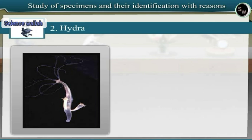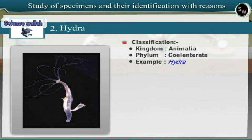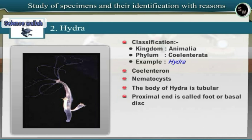Specimen 2: Hydra. Observe a permanent slide of Hydra under the low power of a compound microscope. Hydra belongs to Phylum Coelenterata of Kingdom Animalia. Hydra has a large coelenteron cavity inside the body, presence of nematocysts and tubular polyp form, and is included under Phylum Coelenterata. The body of Hydra is tubular. Its proximal end is called foot or basal disc. The distal end consists of a conical elevation called hypostome. The mouth is situated on the hypostome.